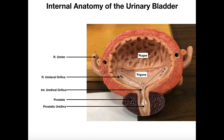This triangular region here is called the trigone. The trigone is bounded by three structures: the right ureteral orifice, the left ureteral orifice, and the internal urethral orifice — those three orifices. It's an area where urine initially collects; if you imagine the bladder initially empty and urine comes in through the right and left ureters, it will initially move into the trigone. It's really just a landmark, not a region with significant unique physiology.